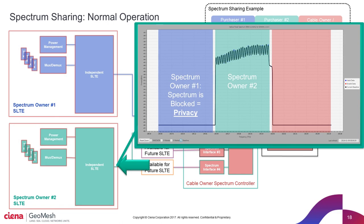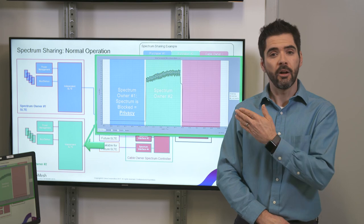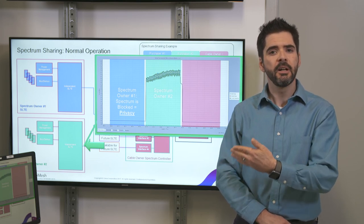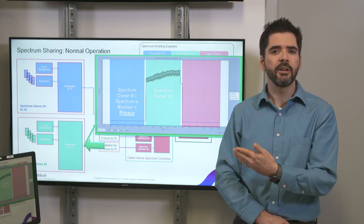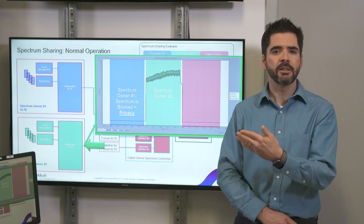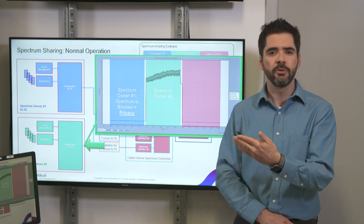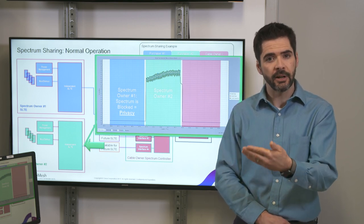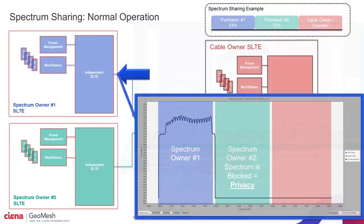After the spectrum controller, we can see the spectrum privacy function at work. While all the light was present at the input to the spectrum controller, the bandwidth allocated to spectrum owner two is the only thing present at the input to their SLTE. Similarly, spectrum owner number one only receives their allocated spectrum.